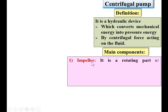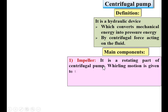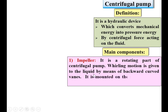First component: impeller. It is a rotating part of a centrifugal pump. Whirling motion is given to the liquid by means of backward curved vanes. It is mounted on the shaft which is coupled to an electric motor.